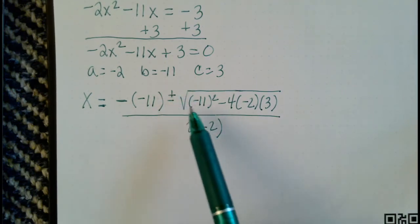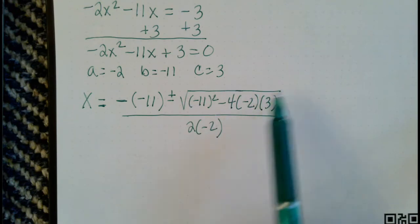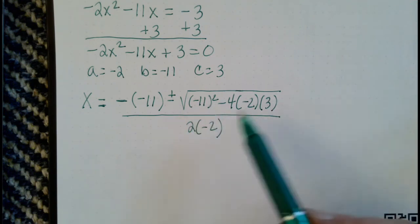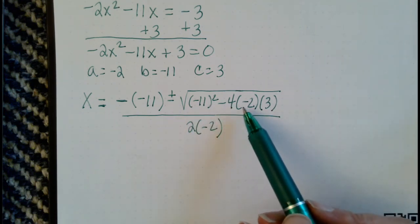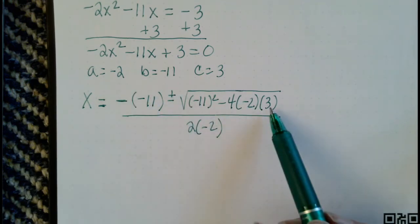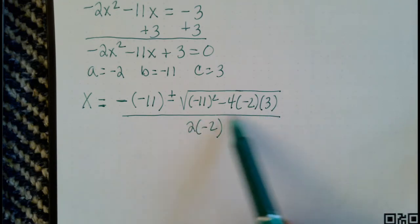plus or minus the square root of b squared, we do want that negative 11 in parentheses, minus 4 times the value of a, which is negative 2, times c, the value of c, which is 3, all divided by 2 times negative 2.